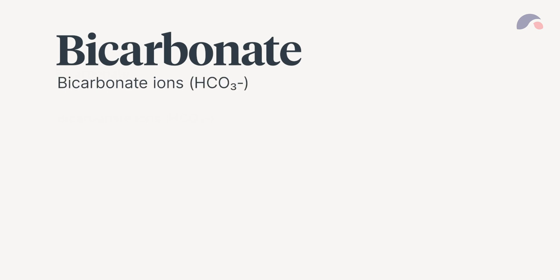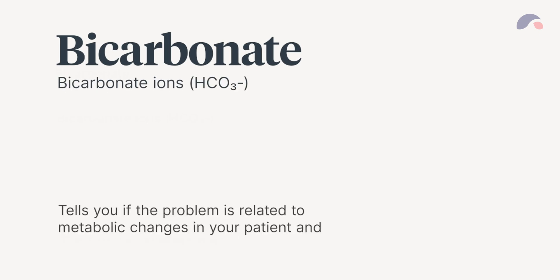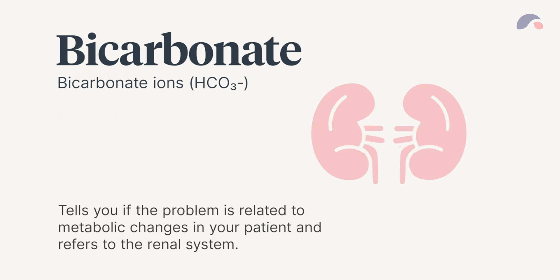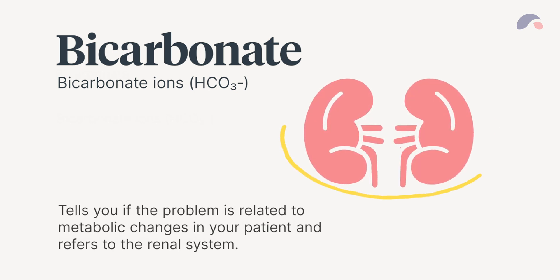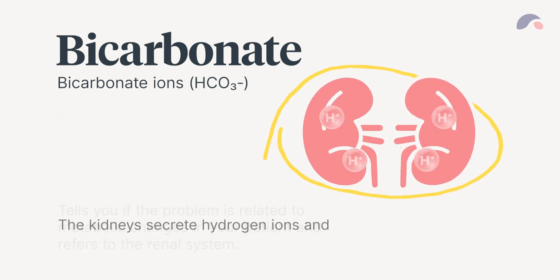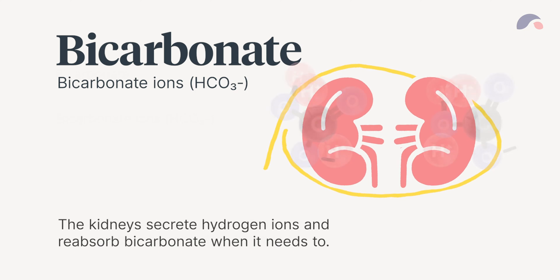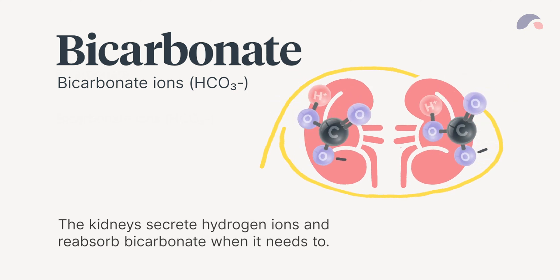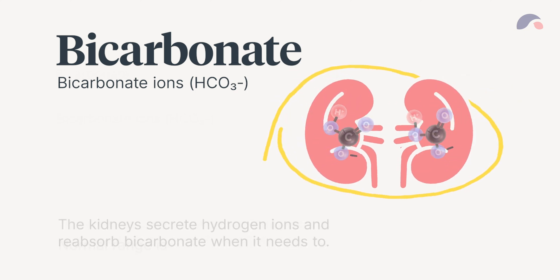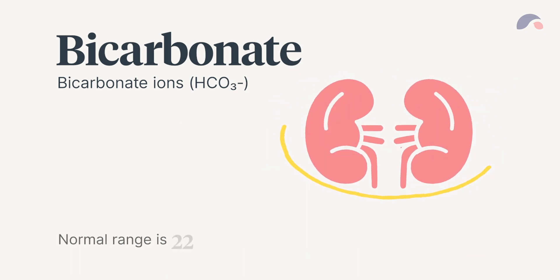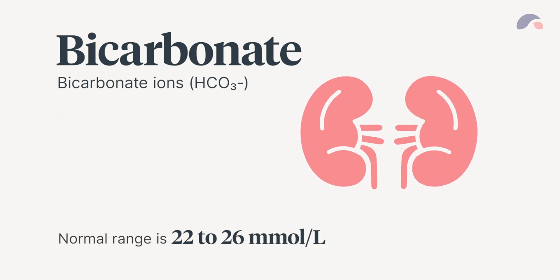Bicarbonate ions, or HCO3 negative, will tell you if the problem is related to metabolic changes in your patient and refers to the renal system. The kidneys secrete hydrogen ions and reabsorb bicarbonate when needed. The normal range is 22 to 26 millimoles per liter.